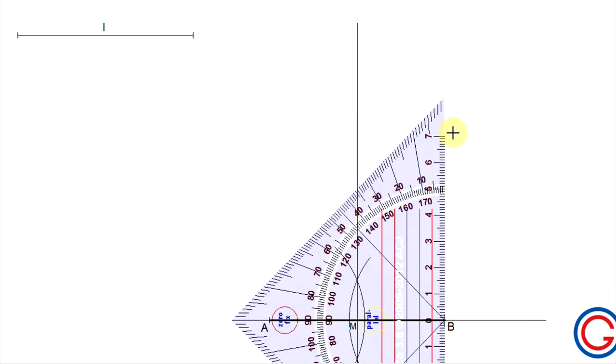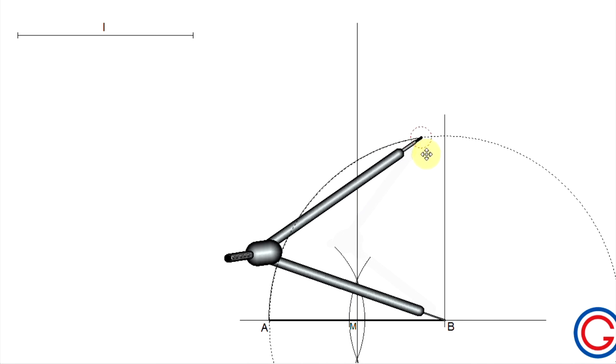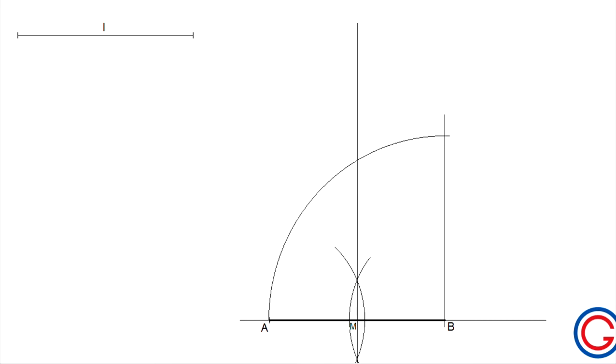OK, so now, let's draw a perpendicular line starting from point B. And this line must be longer than the segment AB. Now, let's scribe an arc of the length AB on this previously drawn line, as shown in the video. And where this arc intersects our line, we will call this point P.